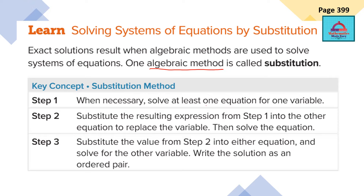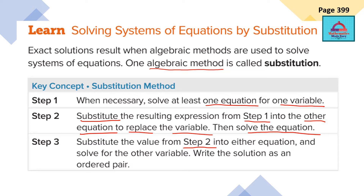You are going to solve one of the two given equations for one variable which is easy to find, and then in step two you are going to replace or substitute it into the other equation. From step one you get the value of the variable, put it in the other equation, and simplify. In step three, substitute the value from step two into the other equation to get the remaining variable, and write the solution as an ordered pair.